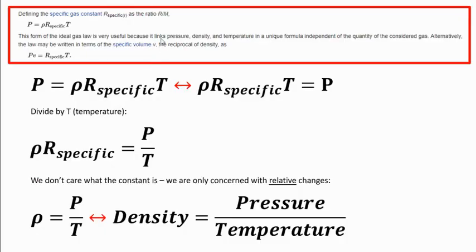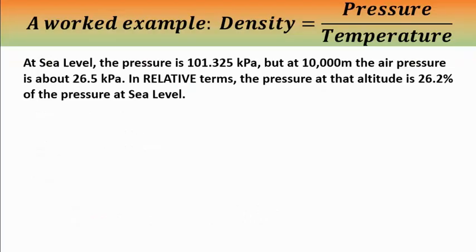Dr. John took issue with me simplifying the ideal gas law. Here is how and why I simplified it. I've taken the formula — a restatement of the ideal gas law — where pressure equals density times the specific gas constant times temperature. Flipping it around and dividing by temperature gives: density times the gas constant equals pressure over temperature. Since I'm only concerned with relative changes in pressure and temperature, I drop the constant and arrive at: density equals pressure over temperature. Let's do an example to see how this formula works.